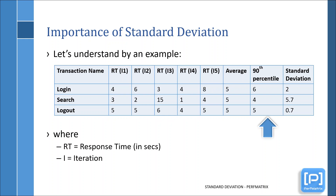The second question was: why can't the 90th percentile alone be considered to prove the consistency of the system? If you look at the search transaction, it has the lowest 90th percentile but the highest standard deviation. It means that the search transaction's performance is good but not consistent. For consistency of the transaction, you need to consider the standard deviation as well.